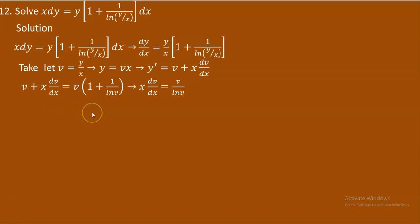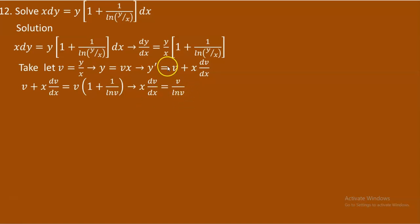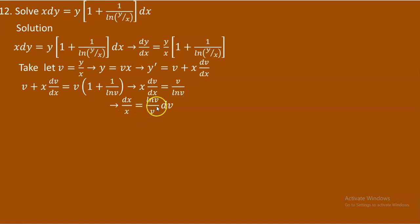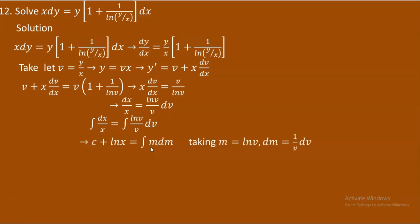Simplifying: the v on both sides cancels, leaving x dv/dx = v/ln v. This is separable. Separating variables gives dx/x = (ln v)/v dv, with everything in x on the left and everything in v on the right.